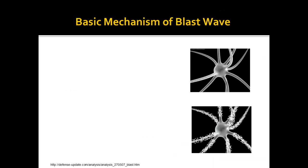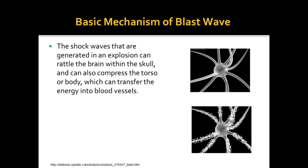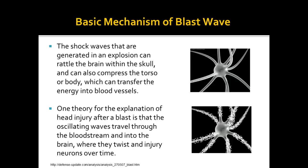The shock waves that are generated in the explosion can rattle the brain within the skull and can also compress the torso or body, which can transfer energy into the blood vessels. That energy is transferred to the blood which goes into the brain. One theory for the explanation of head injury after a blast is that the oscillating waves travel through the bloodstream and into the brain where they twist and injure neurons over time.